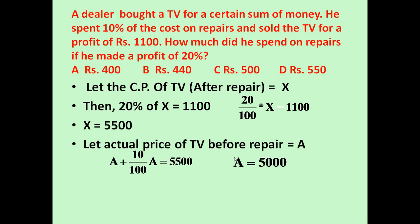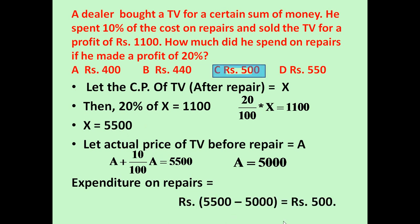So before repair the cost of the TV is Rs 5000, and after repair it is Rs 5500. The expenditure on repairs is equal to 5500 minus 5000, which is Rs 500. So he spent a total of Rs 500 on repairs.